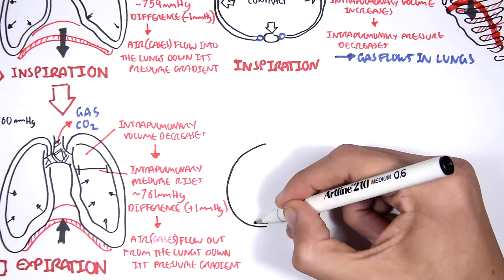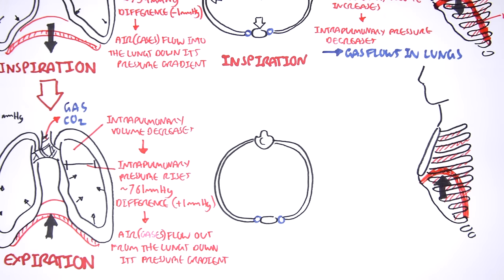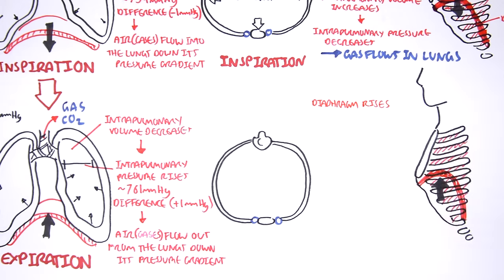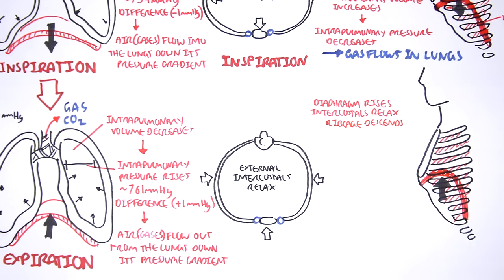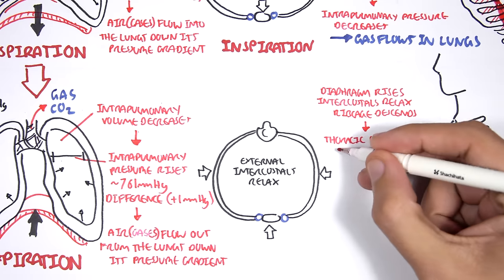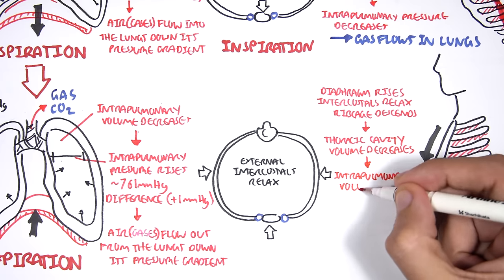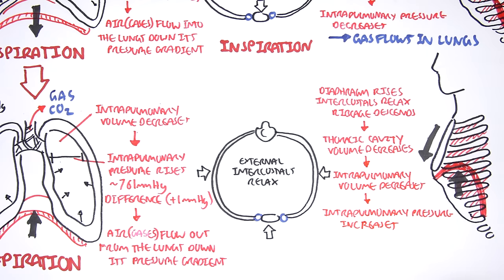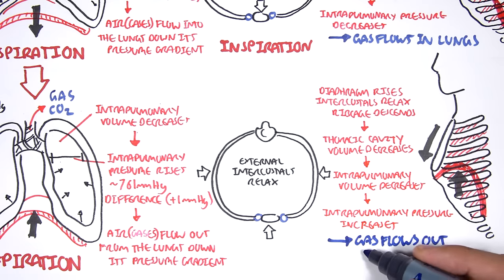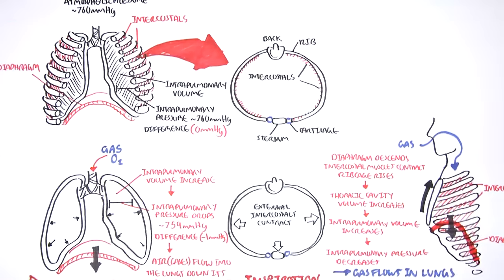In expiration, the diaphragm rises and the intercostal muscles relax. The thoracic cavity shrinks and the rib cage descends, decreasing the thoracic cavity volume. This causes the intrapulmonary volume to decrease, which causes the intrapulmonary pressure to increase — so gas flows out of the lungs from higher pressure inside to lower pressure in the atmosphere outside.